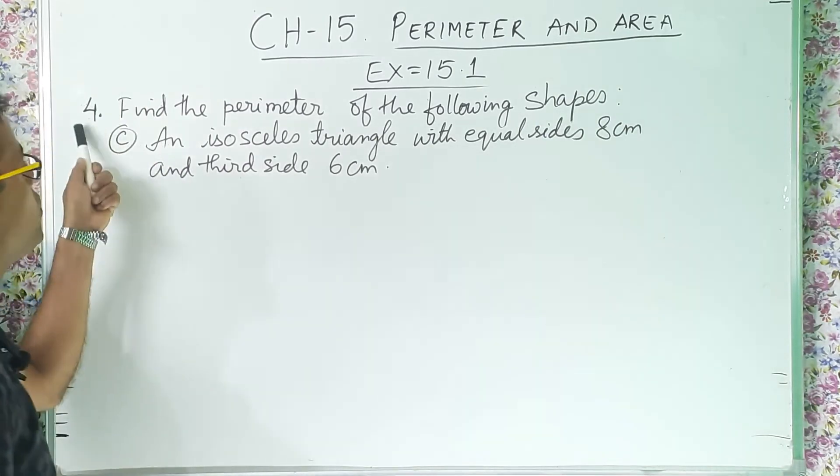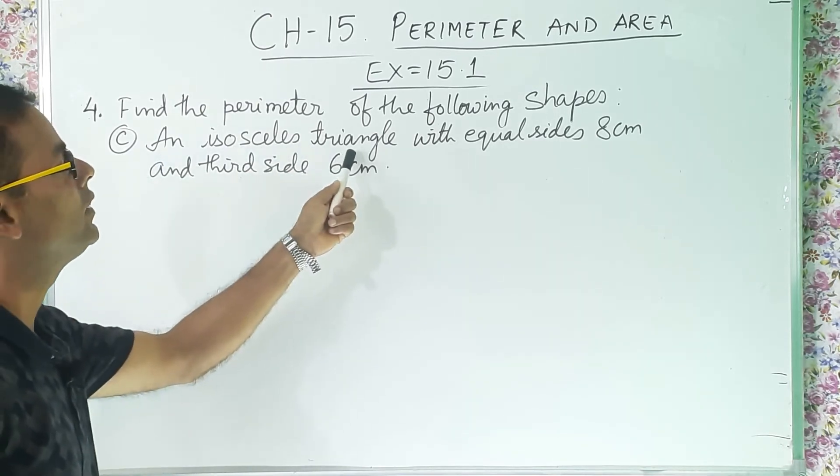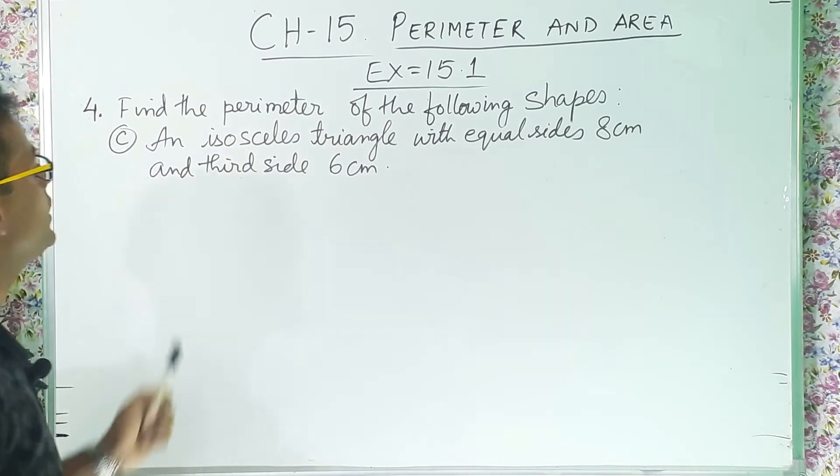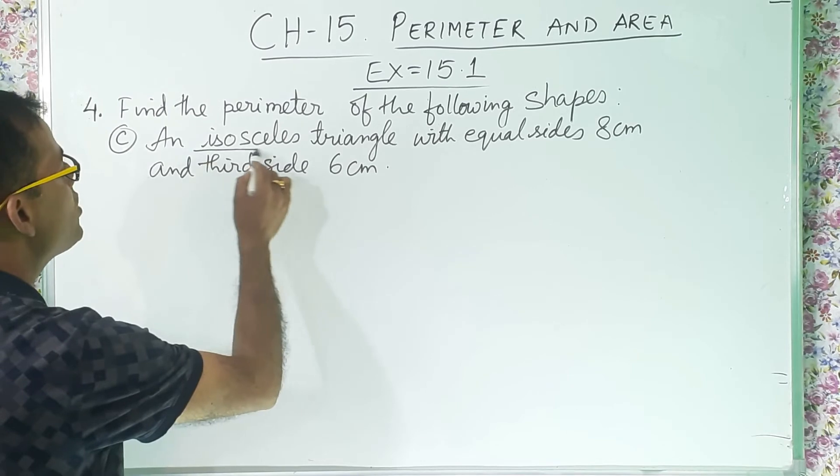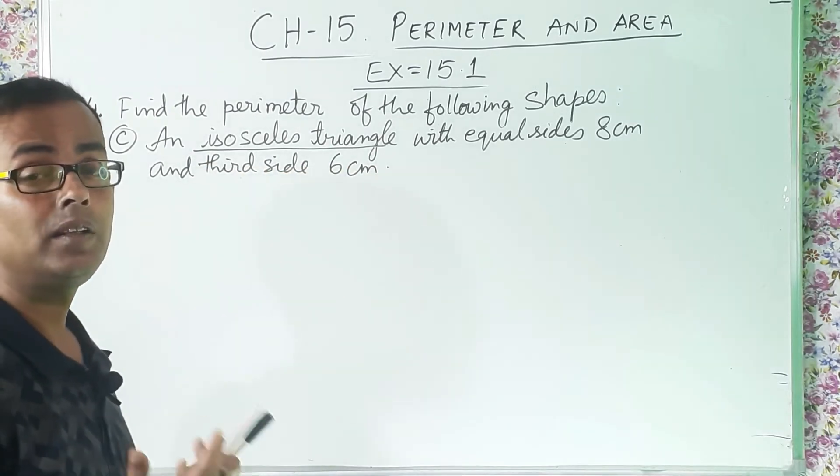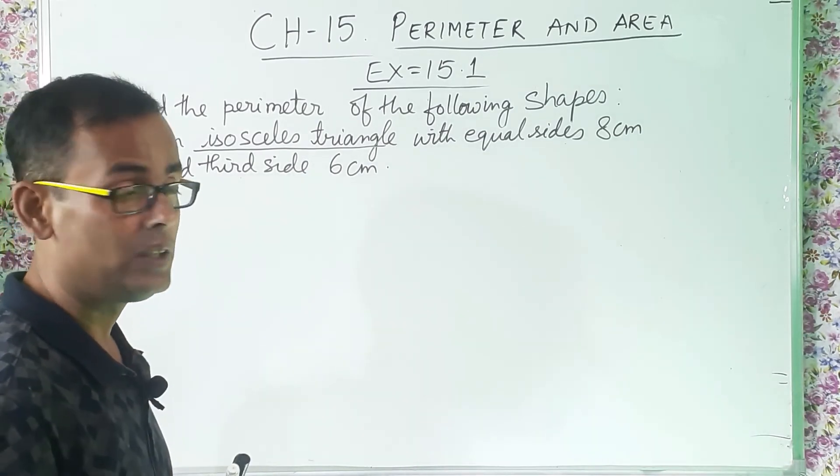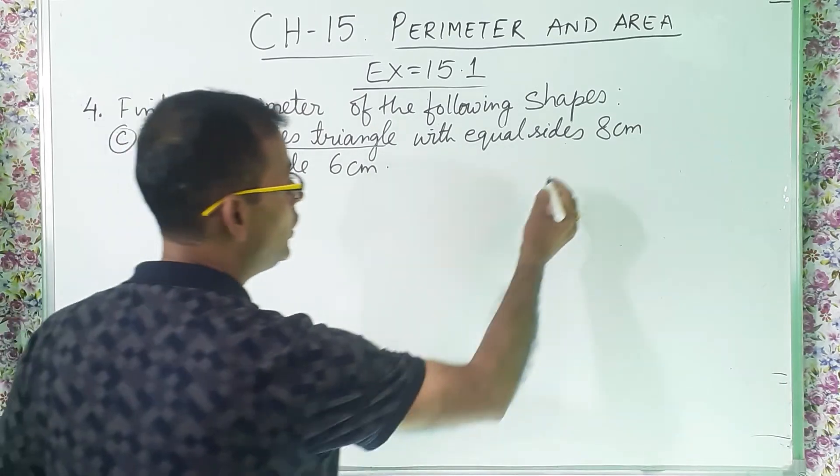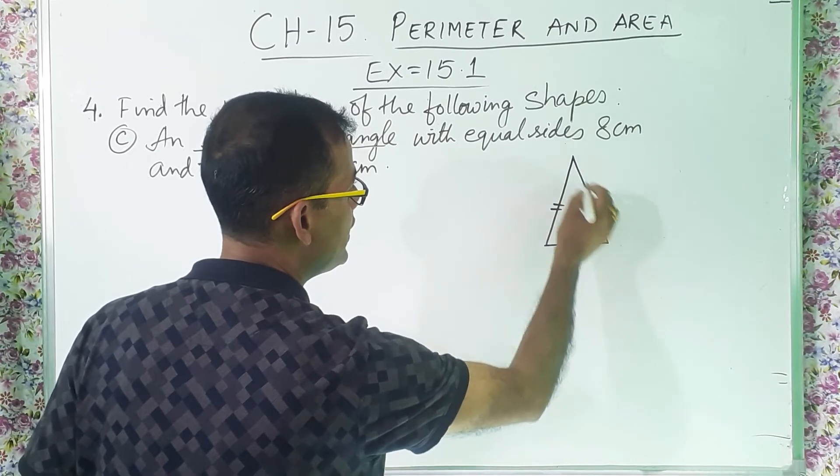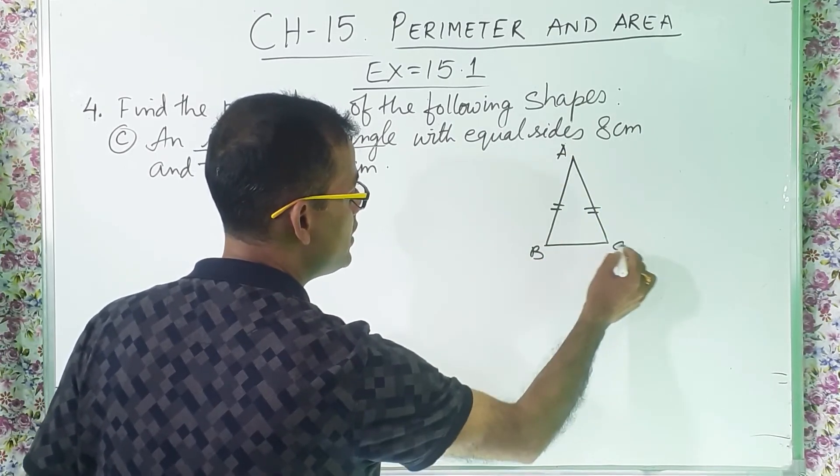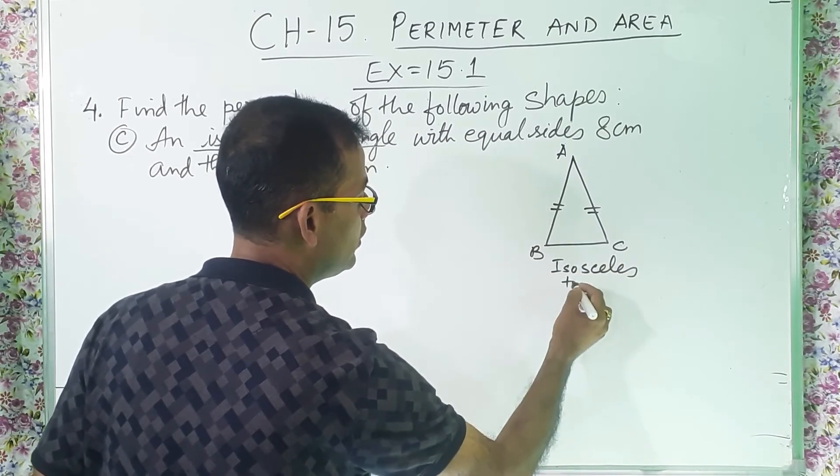Now question number 4c. Let us see what is the question. An isosceles triangle with equal sides 8 centimeter and third side 6 centimeter. So here isosceles triangle. Isosceles triangle means what? Isosceles triangle means a triangle whose two sides are equal. So let us draw, where we have to show that two sides are equal. So these two sides are equal. A, B, C, isosceles triangle.